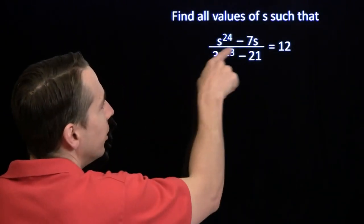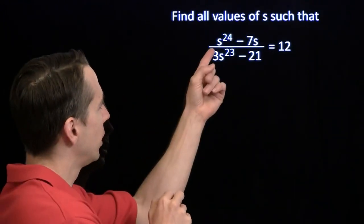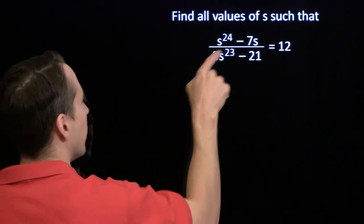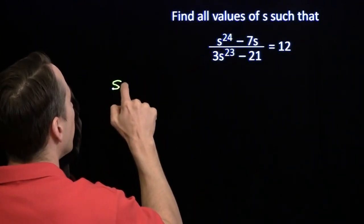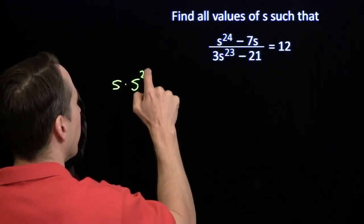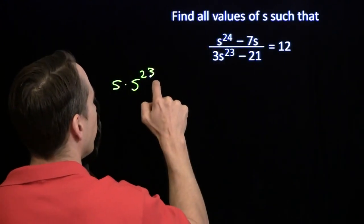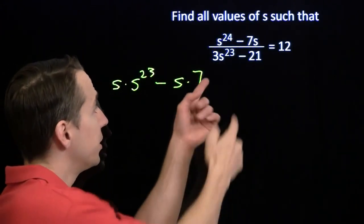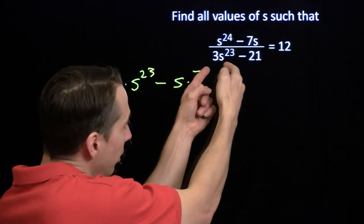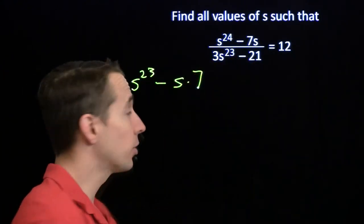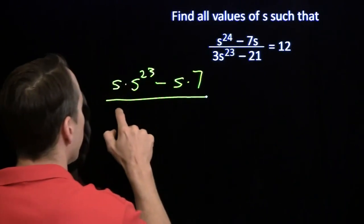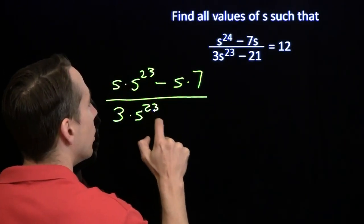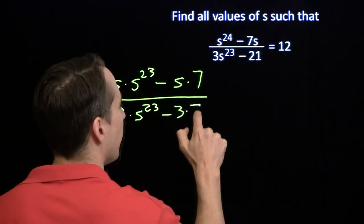Now, if I look at that numerator there, I see I can factor out an s. I can write that numerator, I'm going to write that fraction right here, I'm going to write the numerator as s times s to the 23rd, that of course is s to the 24th, minus s times 7. And in the denominator, both of these terms here have a factor of 3. I can write this as 3 times s to the 23rd minus 3 times 7.